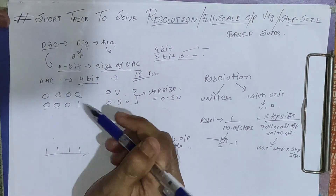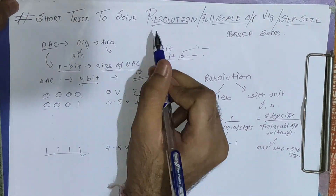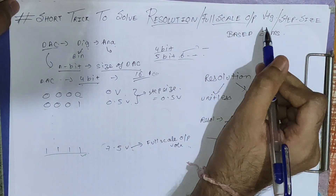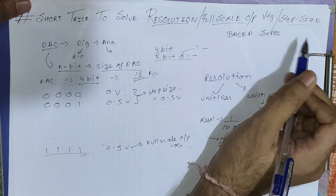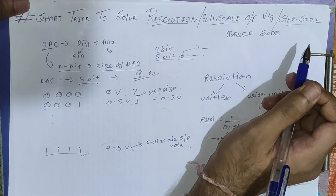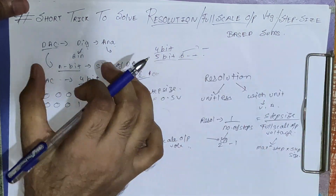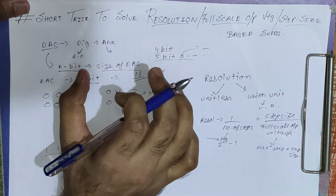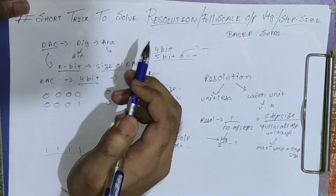Hello friends, today we will see the short trick to solve resolution, full-scale output voltage, and step-size based sums. So before starting the trick, we will see a quick discussion on DAC.